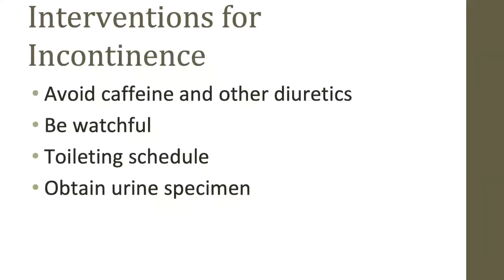Many people lose control of their bowel and bladder in the advanced stages of FTD. Things to keep in mind include avoiding caffeine and diuretics, such as in tea, coffee, and alcohol, as this may help reduce the frequency of incontinence. Because individuals with FTD don't recognize the need to go to the bathroom, it may be up to you to watch for signs. You might want to consider a toileting schedule guided by the clock or setting a timer to remind the person to use the bathroom.